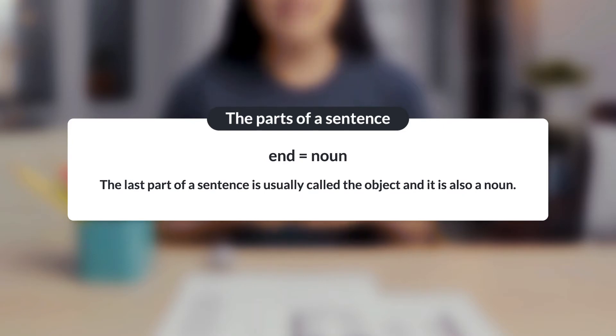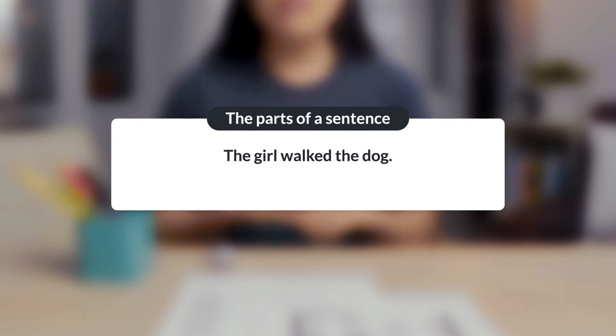And finally, the last part of a sentence is usually called the object and it is also a noun. For example, look at the sentence, the girl walked the dog.